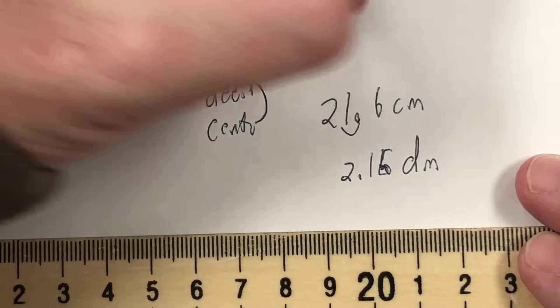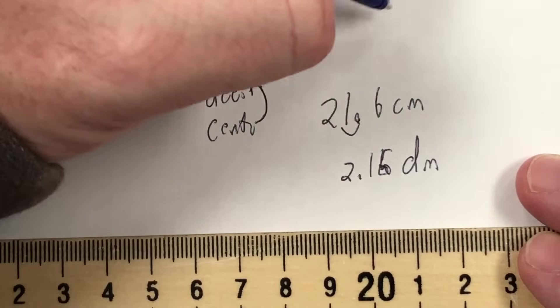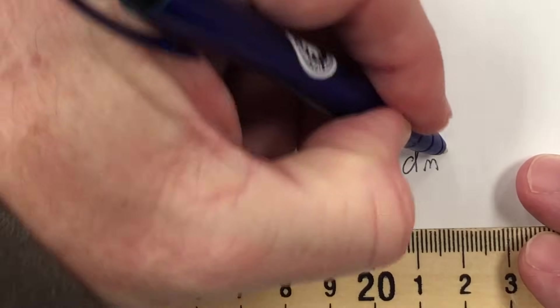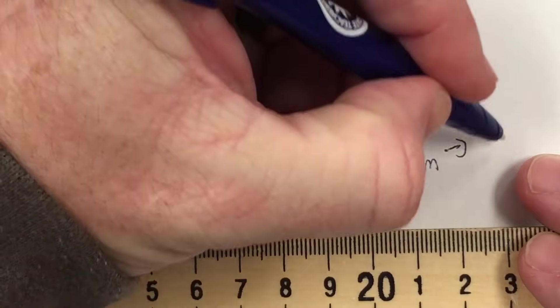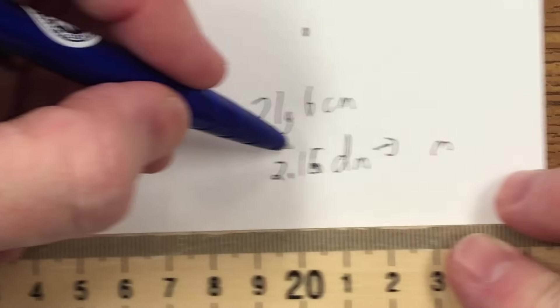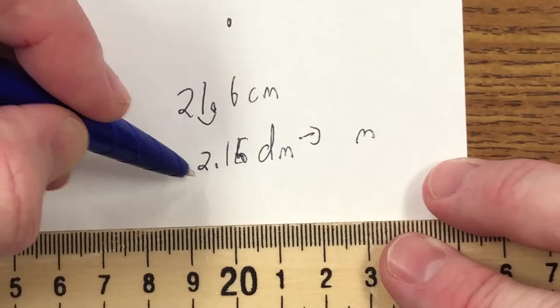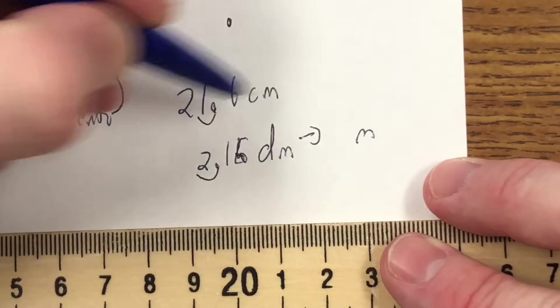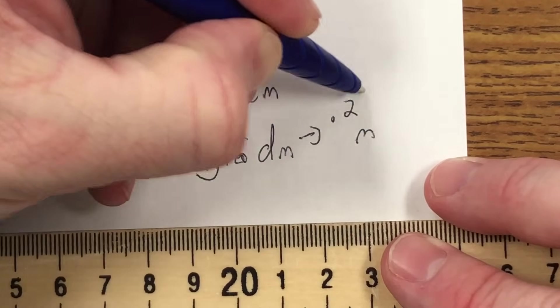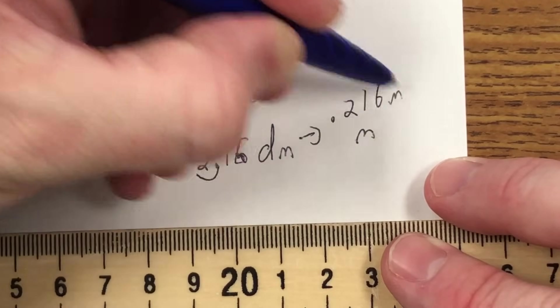We can keep going — all the way to meters. We move that decimal again and it's 0.216 meters.